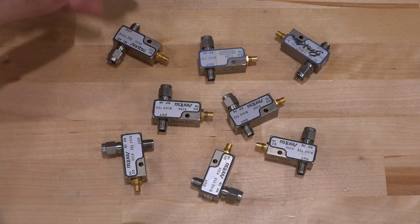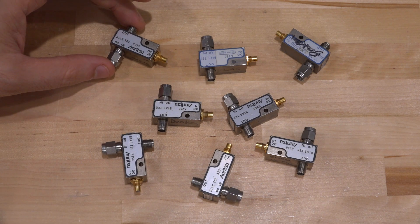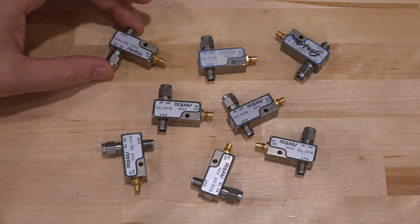Anritsu does make very good bias tees. This is maybe a mid-range model. So they all have the same issue. All of them have no DC connection. There's no DC path anymore.